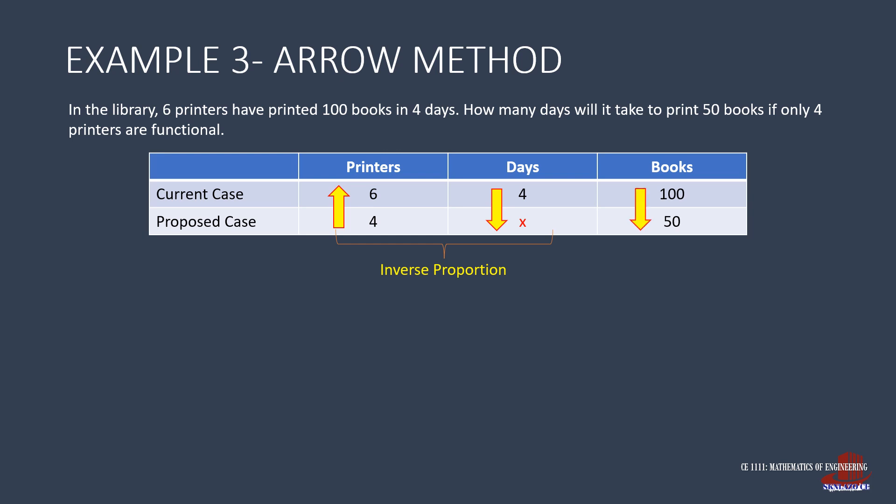Next, when the days of work are extended, most likely that there will be more books printed, so the second relationship is direct proportion. Now that arrows have already been identified, we can generate the equation. From the incomplete ratio, 4 over X is equal to 4 over 6 times 100 over 50. This makes X as 4 times 6 times 50 over 4 times 100, which makes X as 3 days.